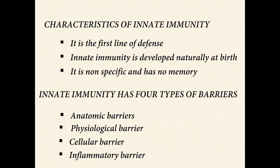Innate immunity. Characteristics of innate immunity: it is the first line of defense, developed naturally at birth. It is non-specific and has no memory. Innate immunity has four types of barriers: anatomic barrier, physiological barrier, cellular barrier, and inflammatory barrier.